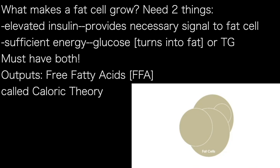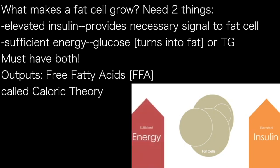So what makes a fat cell grow? You need two things, and you really do need two things, as much as they've been split into two different camps. You need elevated insulin, and you need sufficient energy. These are not the same, but they work together. Insulin provides the necessary, utterly essential signal to the fat cell to grow.